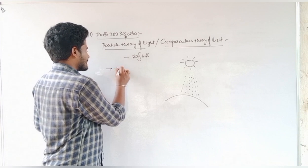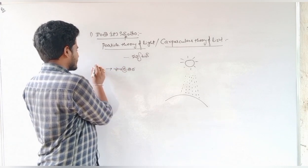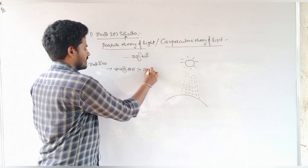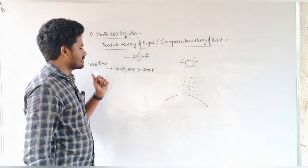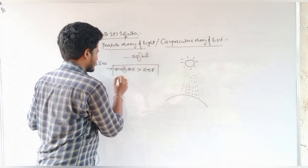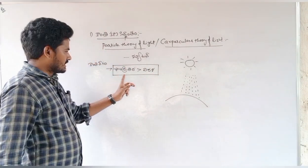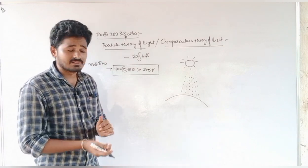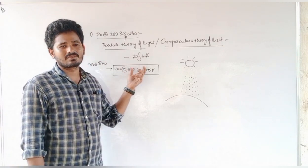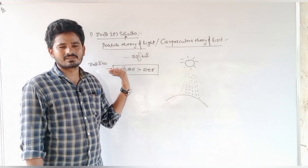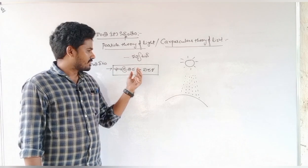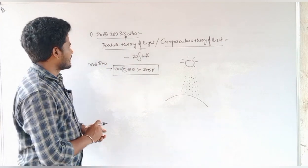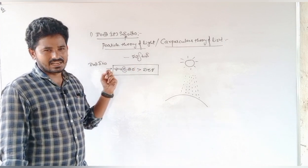According to corpuscular theory, light travels in straight lines as particles moving through a medium. Light particles move from the source to our eyes, and that's how we see objects.